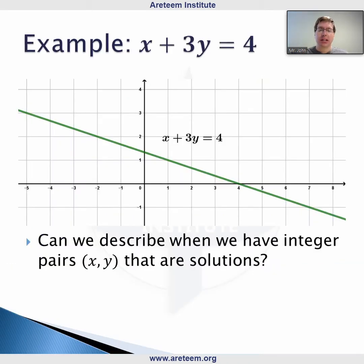Let's look at a simple example. Suppose we have x plus 3y equals 4. This is a line with a slope of negative one-third. We can write it as x plus 3y equals 4, so A is 1, B is 3, and C is 4.